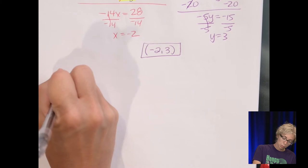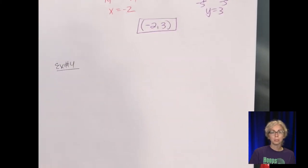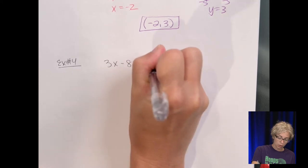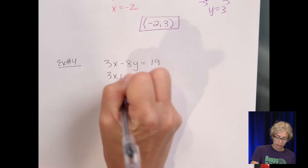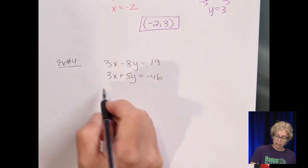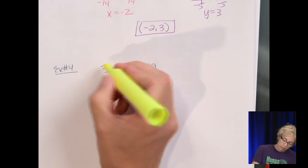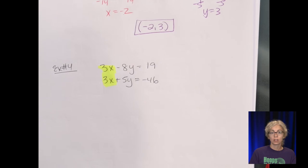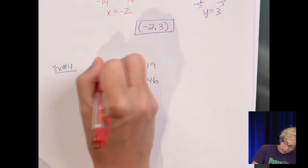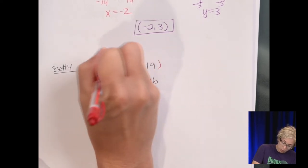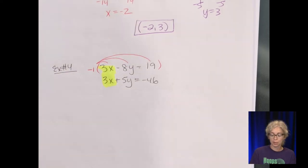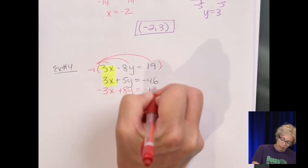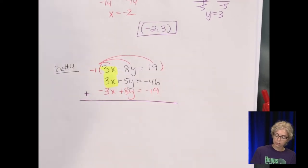Number 4, the last elimination example. The equations are 3x minus 8y equals 19, and 3x plus 5y equals negative 46. The x terms are the same but not opposite signs — if I add them I'd get 6x, not 0. So I'm going to multiply the top equation by negative 1, writing negative 3x plus 8y equals negative 19 below it.